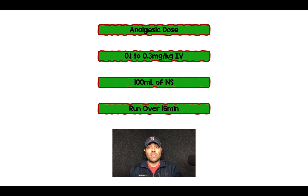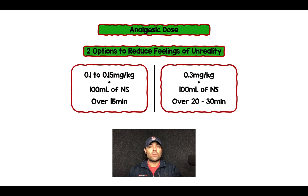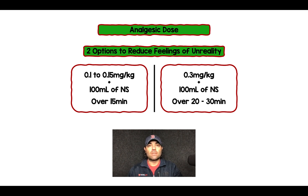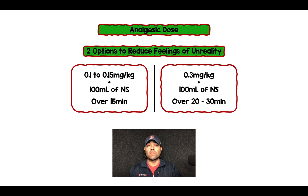Anywhere from 50 to 80 percent, actually. So there are really two options to help reduce this feeling of unreality — and this is opinion and experience-based. We could start by just doing a lower dose, 0.1 to 0.15 milligrams per kilogram, in 100 cc's of normal saline, and run that over 15 minutes.